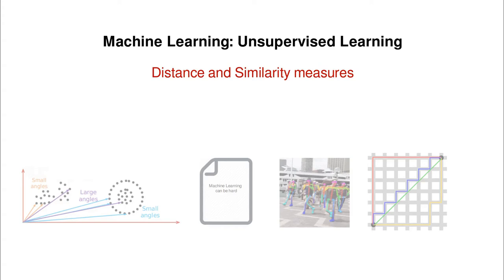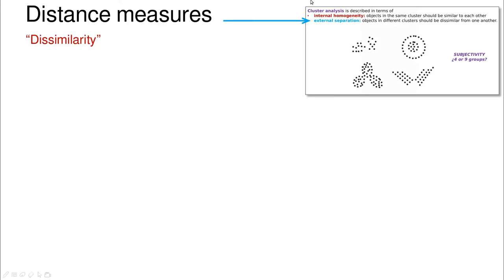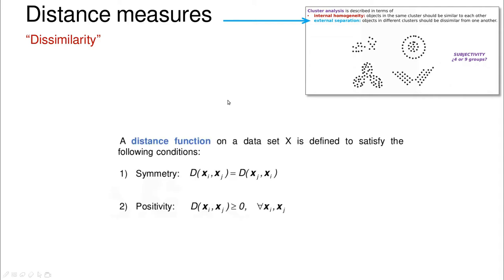So far we've talked about distance in a very loose way, so let me clarify some ideas. Distance is a measure of dissimilarity, how different different points are in a dataset. Remember that cluster analysis is described in terms of external separation and internal homogeneity. We're going to define distance as any mathematical function that satisfies two properties.